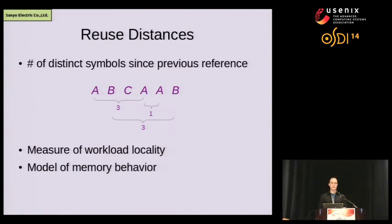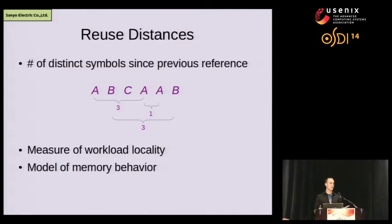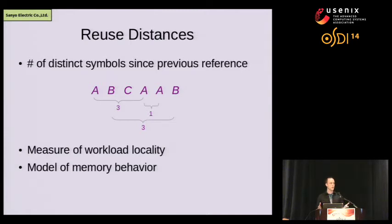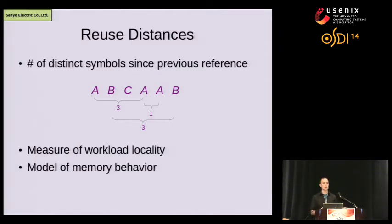LRU prioritizes pages based on reuse distance. Simply put, the reuse distance is the number of distinct disk requests seen since a request for a block and a re-request for that same block. We can think of reuse distances as a measure of locality. Workloads that exhibit a large number of very low reuse distances feature very strong temporal locality, and those will do well with small amounts of fast memory. We can also use reuse distances to model workload behavior — to understand how a workload would behave in a differently configured memory hierarchy, and to design and manage better hierarchies.